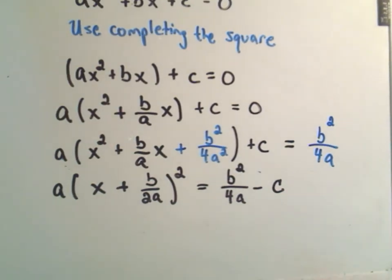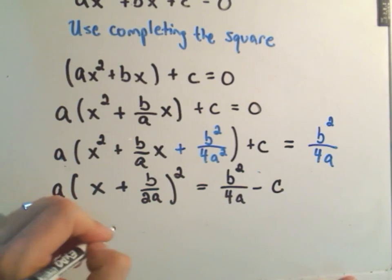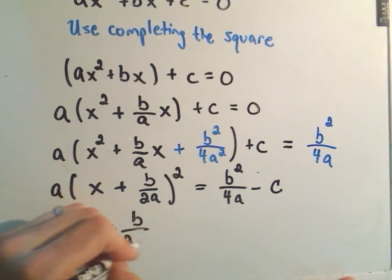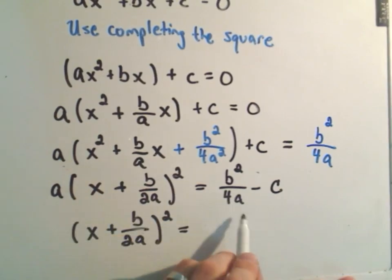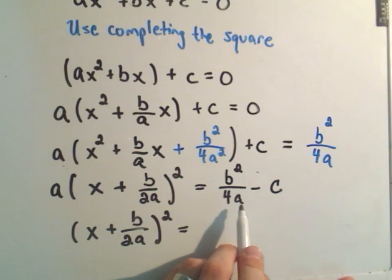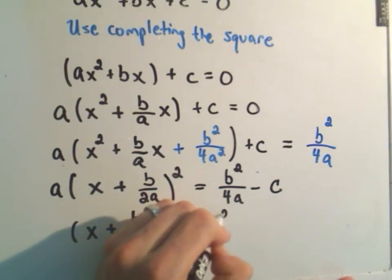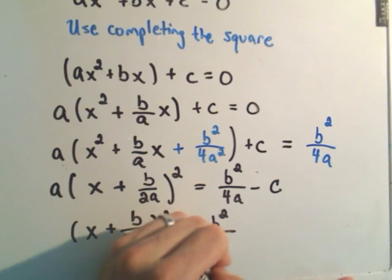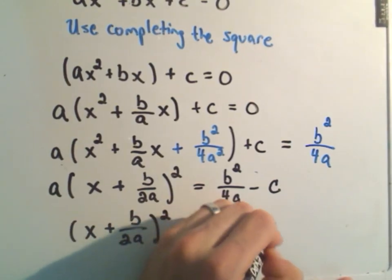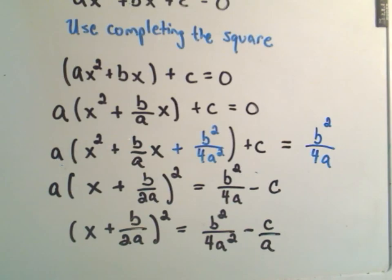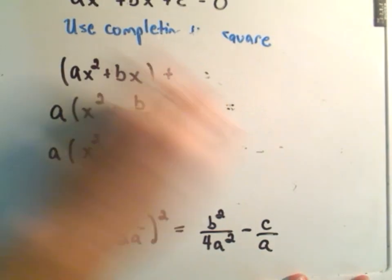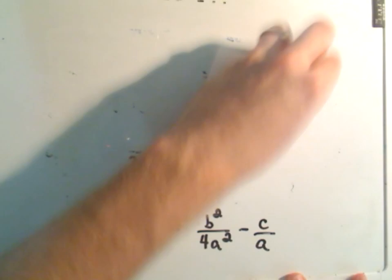The next thing I'm going to do to get rid of the a is I'm going to divide both sides by a. So I'll get x plus b over 2a squared equals, if I divide both sides by a, or you can think about it equivalently, I'm multiplying both sides by 1 over a, I'll get b squared over 4a squared minus c over a on the right hand side. We're starting to get a little bit closer here.